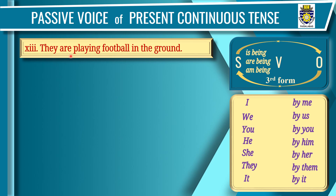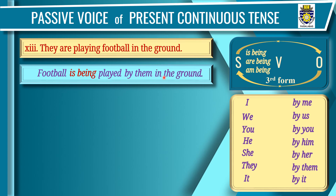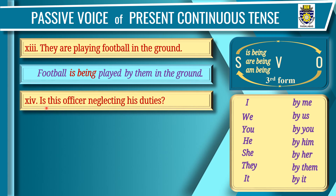Sentence 13: 'They are playing football in the ground.' Subject: 'they'; verb: 'are playing'; object: 'football'; 'in the ground' is an adverb phrase of place. Step one: 'football' at the beginning. Step two: 'they' changes to 'by them'. Step three: third form of 'playing' is 'played'. Step four: 'football' is singular — 'is being'. The adverb phrase remains at the end: 'Football is being played by them in the ground'.